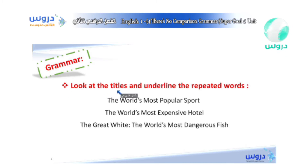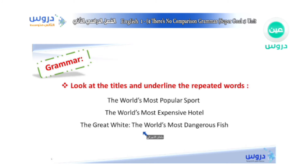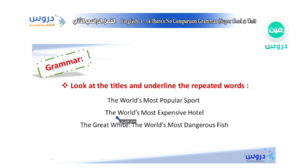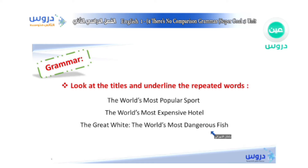Now we will start with our grammar. Look at the titles and underline the repeated words. I want you to look at these three sentences and tell me what's repeated: 'The World's Most Popular Sport,' 'The World's Most Expensive Hotel,' 'The World's Most Dangerous Fish.' Which words are repeated across all three sentences?